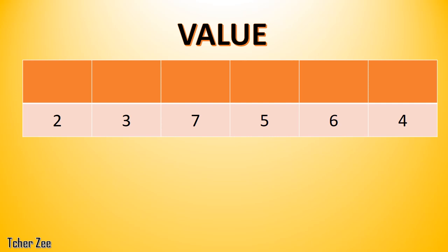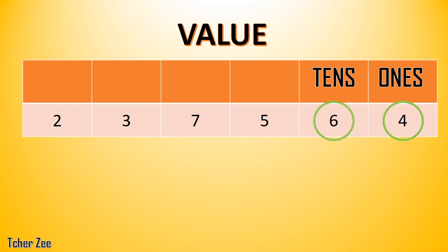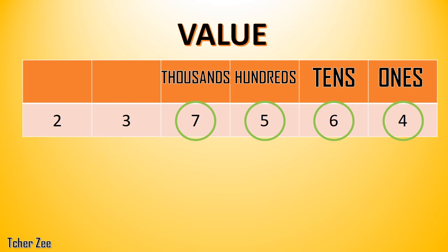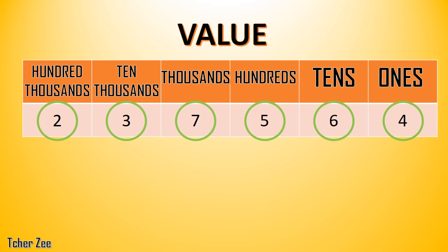Now let's talk about the value. We said that 4 is in the ones place value, and 6 is in the tens place value. How do we get the value? Since 4 is in the ones place value, it means that you have 4 ones. When we say 4 ones, that's equivalent to 4. Very good.